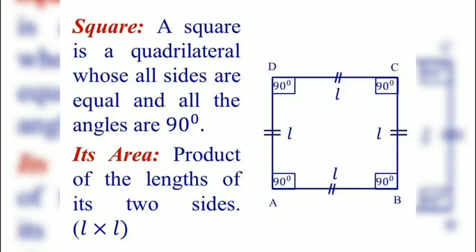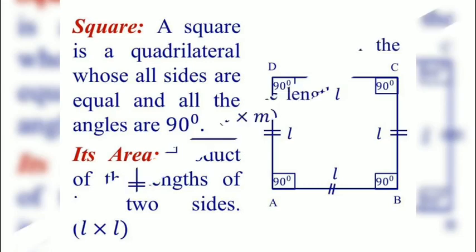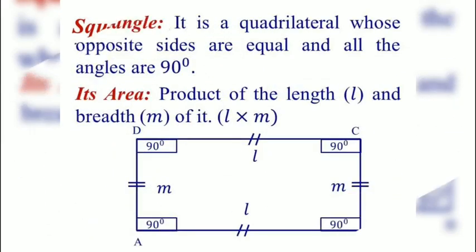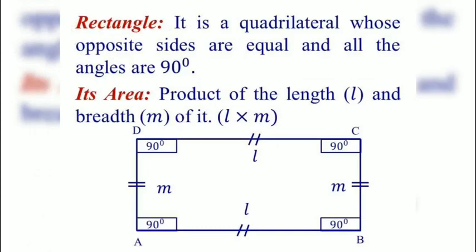Rectangle: a rectangle is a quadrilateral whose opposite sides are equal and all the angles are 90 degrees. A rectangle is a parallelogram in which one angle is 90 degrees, and its area is the product of its length and breadth. So here, length is L and breadth is M, so area is L multiplied by M.